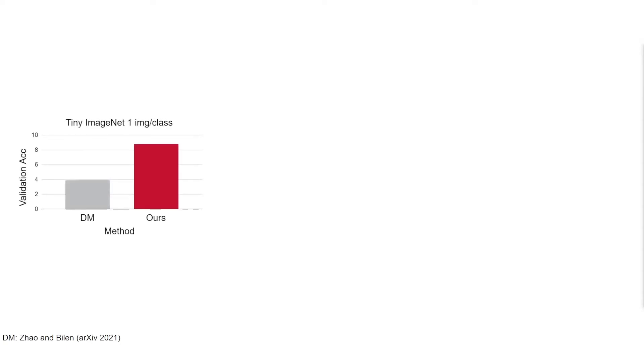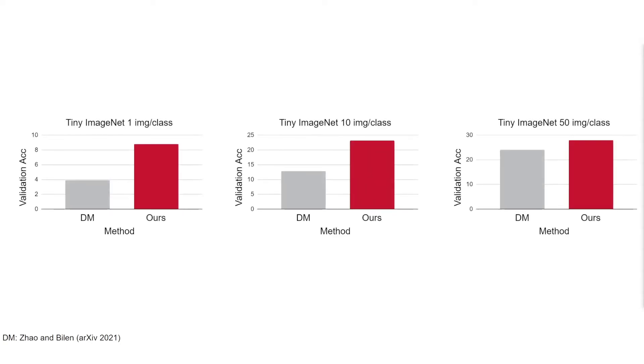Due to the dataset's high complexity, only one other method is capable of distilling Tiny ImageNet. Despite this, we again outperform this method on 1, 10, and 50 images per class.